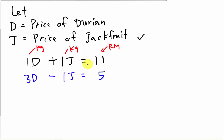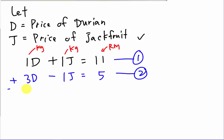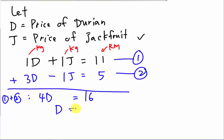I see I have 1J and negative 1J, so I'll use the elimination method. I call this Equation 1 and Equation 2, and I add them together. If I subtracted instead, 1J minus negative 1J would give 2J, but the point of elimination is to eliminate J. So: 1J minus 1J equals 0 — J is gone. Then 1D plus 3D gives 4D, and 11 plus 5 gives 16. So 4D equals 16, which means D equals 4 ringgit. One kg of durian costs RM4.